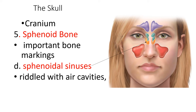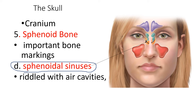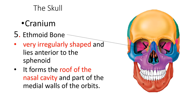Another structure in the sphenoid bone is the sphenoidal sinuses. These sinuses serve to lighten the skull and make the sounds we create resonate. All of the sinus cavities here make our sound resonate and make the skull lighter.